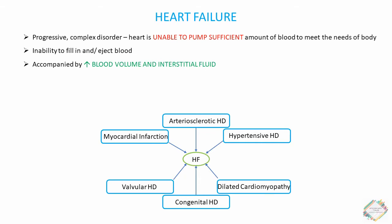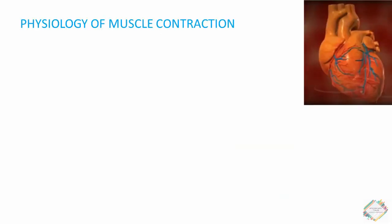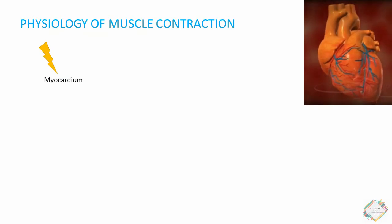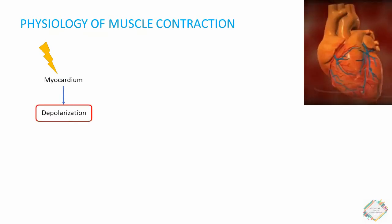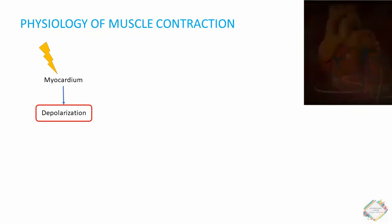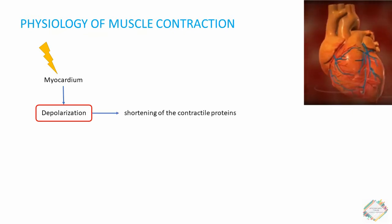Before talking about the different types of heart failure, let's look into the physiology of muscle contraction. The myocardium, just like smooth muscles or skeletal muscles, will respond to stimulation by depolarization of the membrane. Depolarization means contraction — the contractile proteins of the myocardium get shortened, hence contraction occurs.